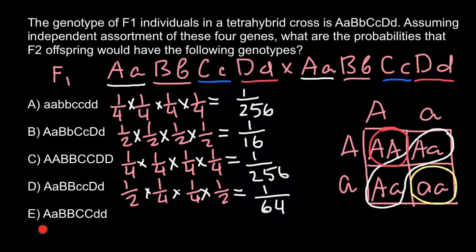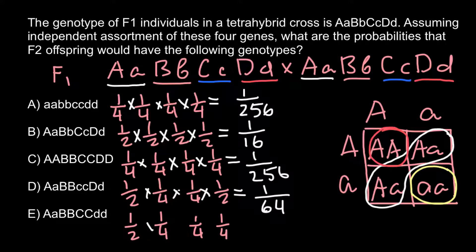In the last example, the probability for gene A to be heterozygous is one half, for gene B to be homozygous dominant is one quarter, for gene C to be homozygous dominant is one quarter, and for gene D to be homozygous recessive is one quarter. When we multiply all these probabilities, the answer is 1 over 128.